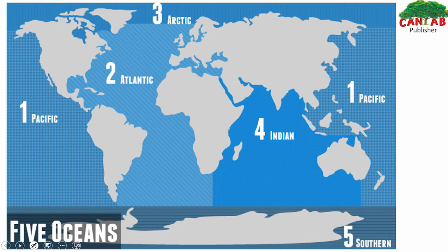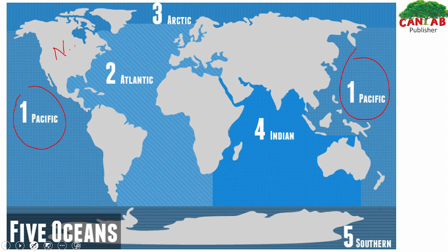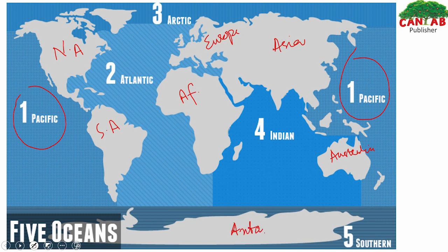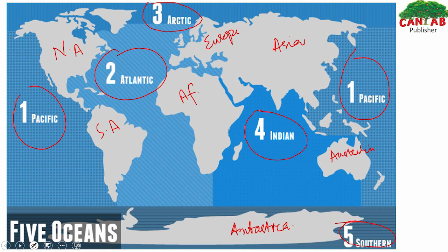Now let me show you on the map. Here you have a very clear picture. This one is the Pacific Ocean — and this portion here is also part of the Pacific Ocean. This is North America, this is South America, this is Africa, this is Europe, this is Asia, and this is Australia. And this continent down here is Antarctica. The ocean between Africa, America, and Europe is called the Atlantic Ocean. The ocean at the northern pole is the Arctic Ocean. The ocean at the southern pole is called the Southern Ocean.